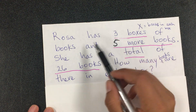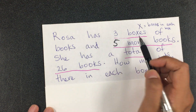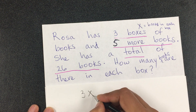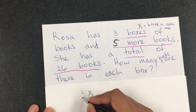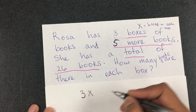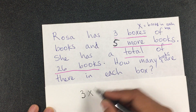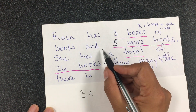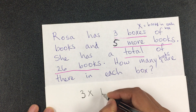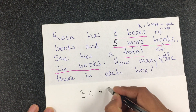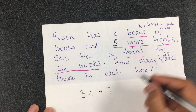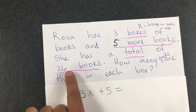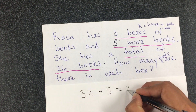Rosa has three boxes of books, so the three represents the three boxes. The X represents the books in each box, and five more books means plus five. The total, so we put equals 26 books.